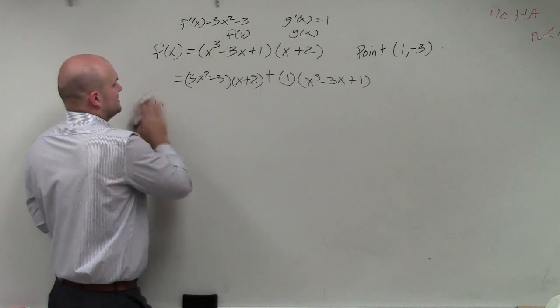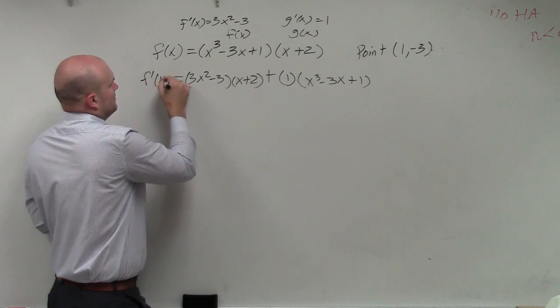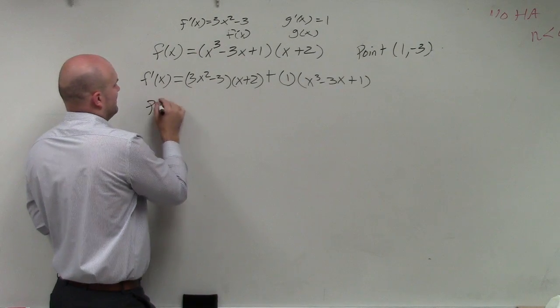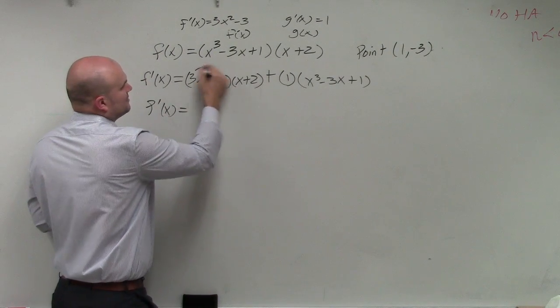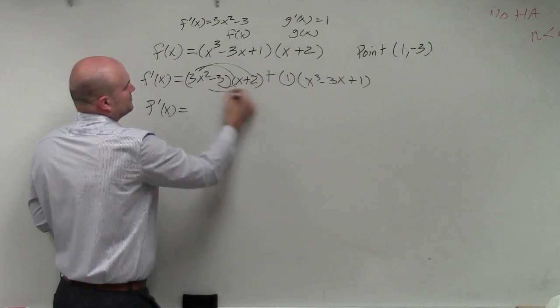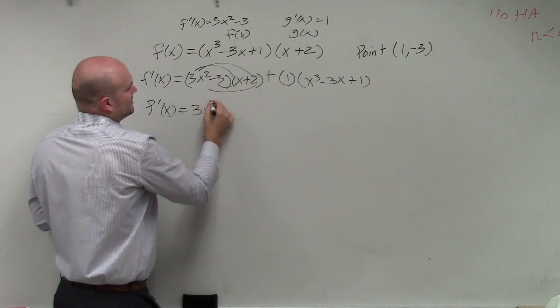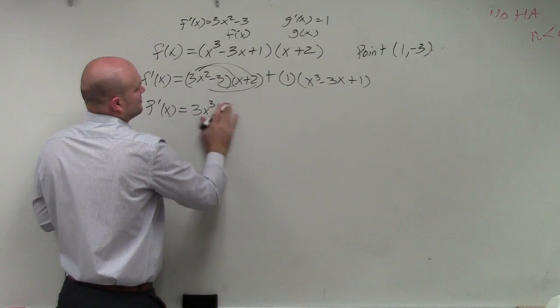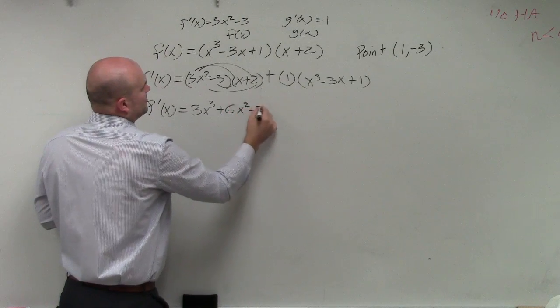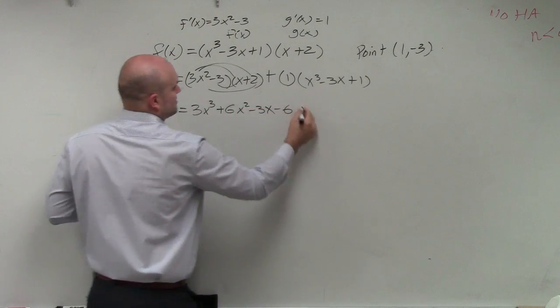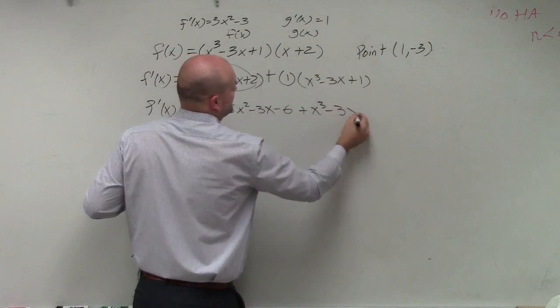Now you can see this one, we're going to have to multiply that out. So we have f prime of x equals, applying FOIL, 3x cubed plus 6x squared minus 3x minus 6 plus x cubed minus 3x plus 1.